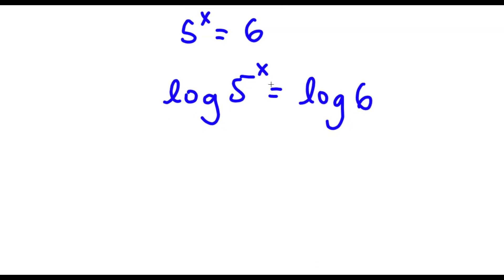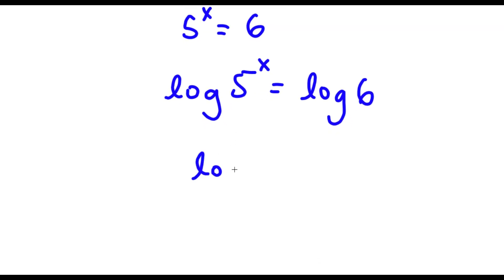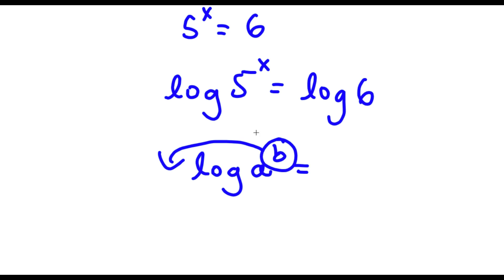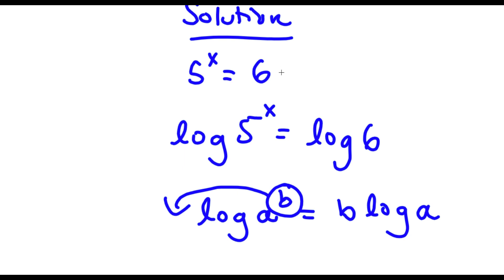An important property of logarithms is that if I have something in the form log a to the power of b, I can actually move this exponent b to the front — so this equals b times log a. The reason why this property is so useful is because right now we have 5 to the power of x equals 6, and because x is a decimal, it's really hard to find the value of x just as an exponent. But once we move the exponent x to the front, it becomes a real term and it will be much simpler to solve.